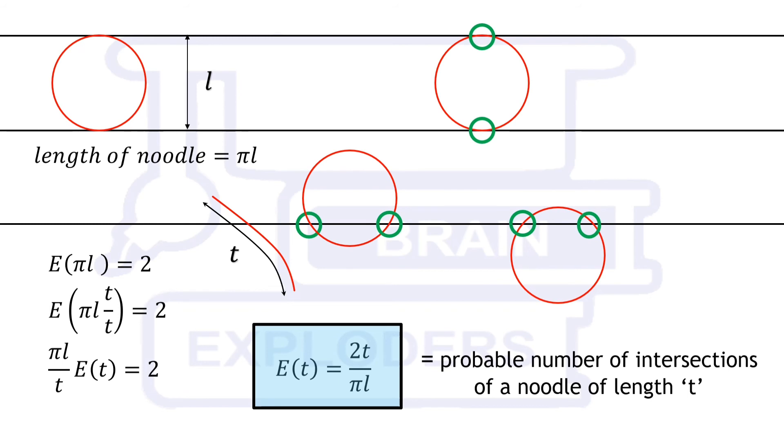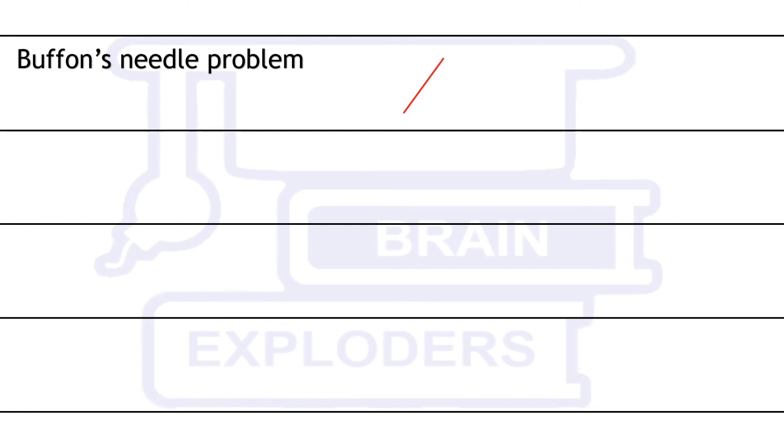Using this let us solve Buffon's needle problem. Assume a needle of length t where t is less than L. Since needle is small thus it cannot intersect more than once at a time.